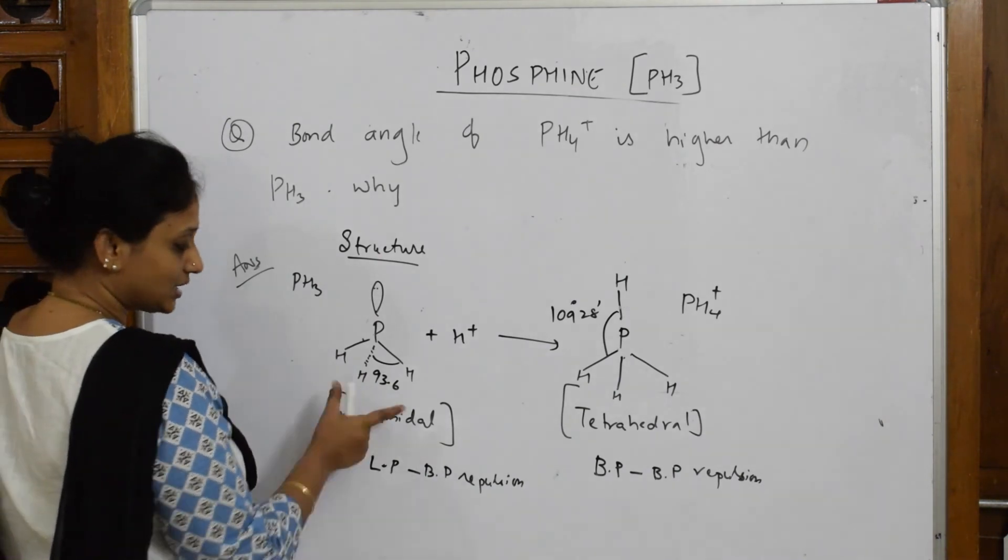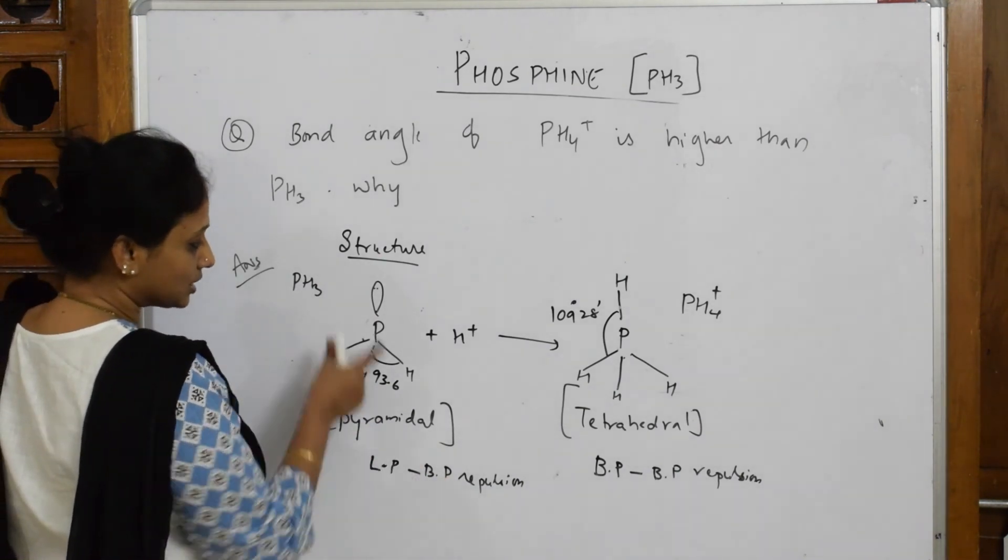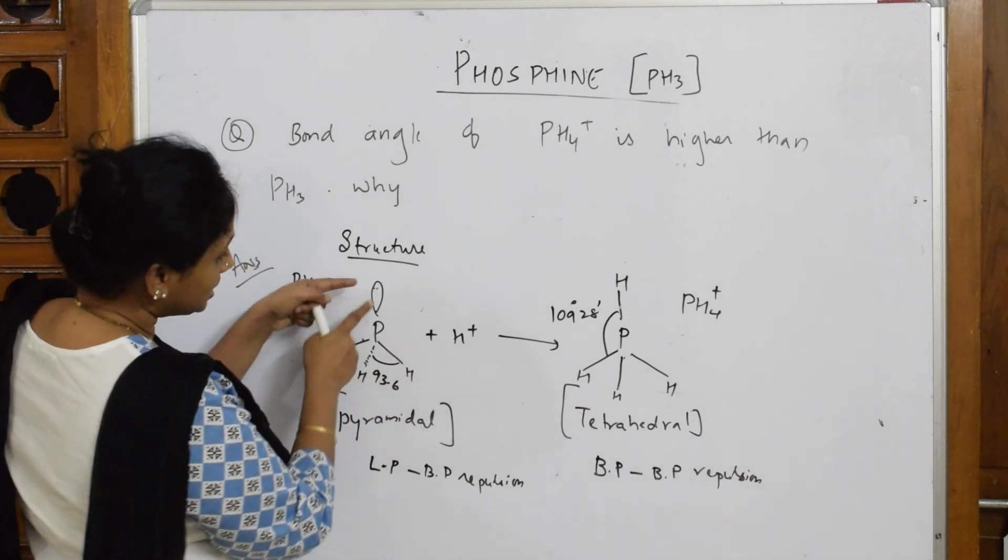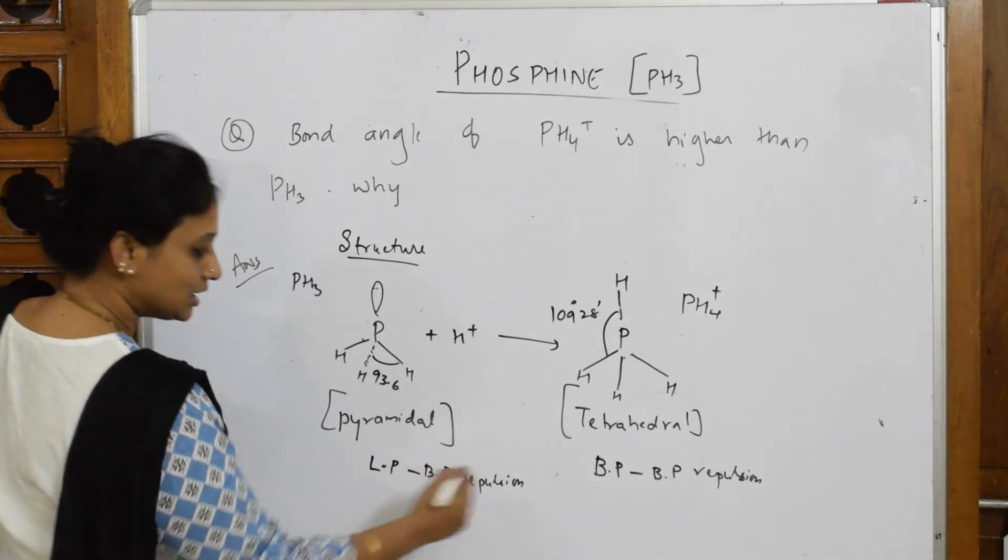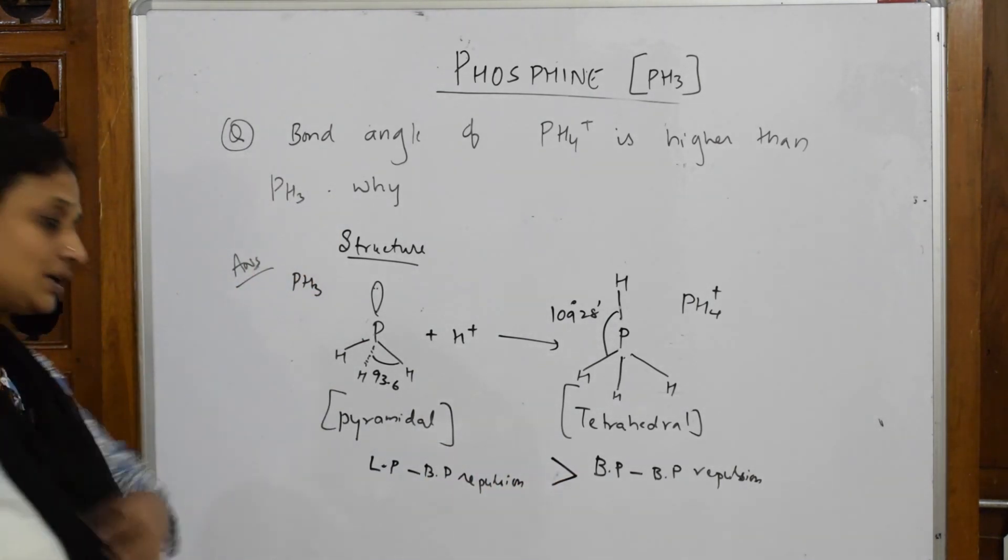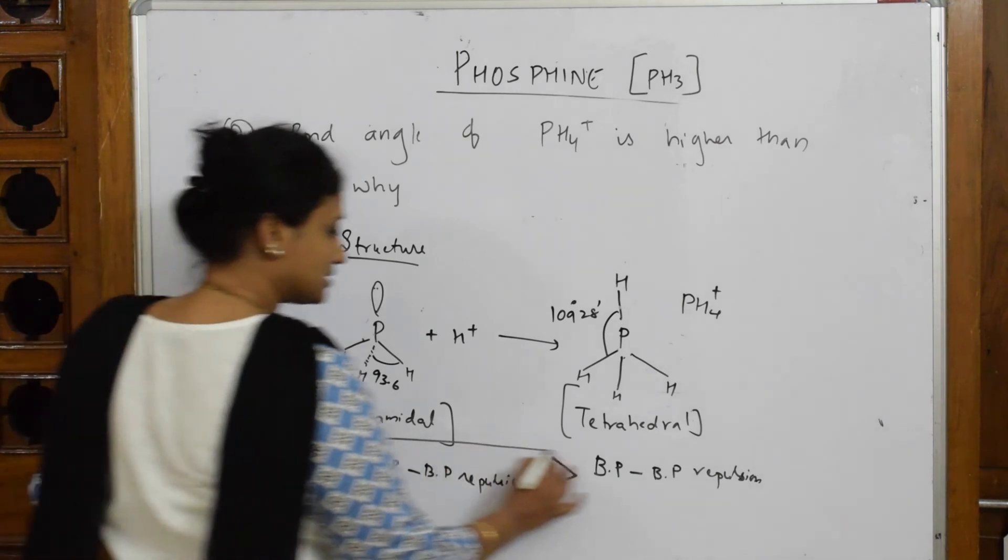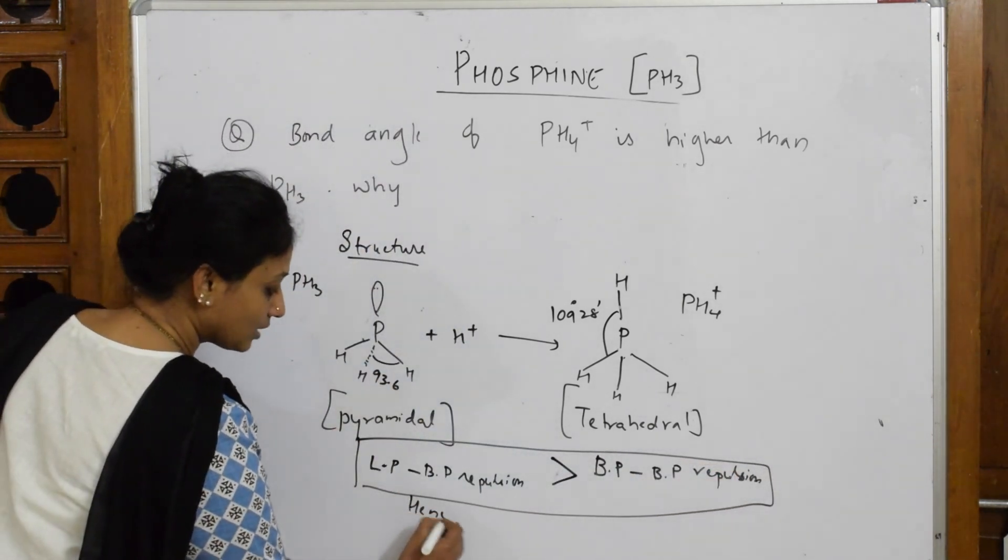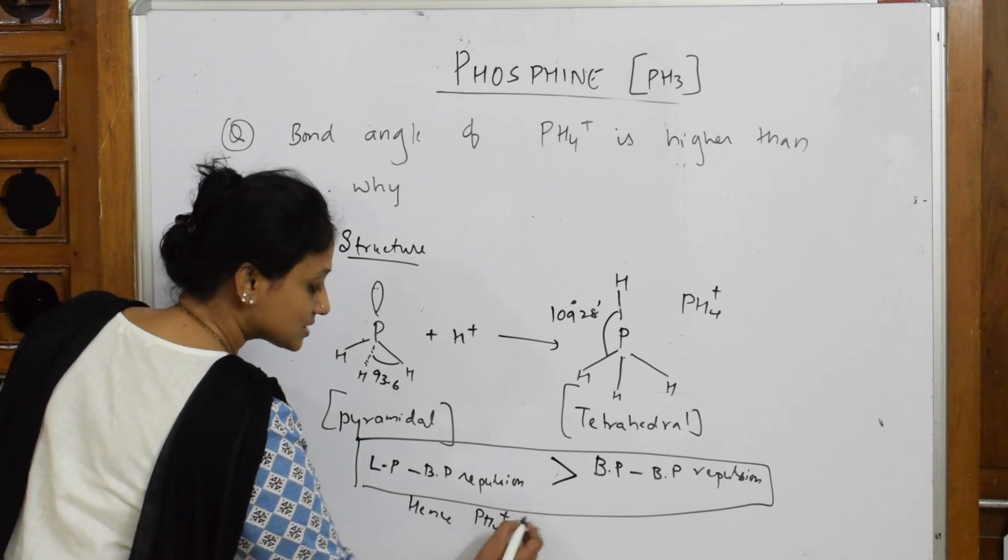Let's answer now. The bond angle here is less because when the repulsions are more, this will try to push the bond angle closer. Lone pair-bond pair repulsions are greater than bond pair-bond pair repulsions. This is the reason. Hence, PH4+ has higher bond angle.